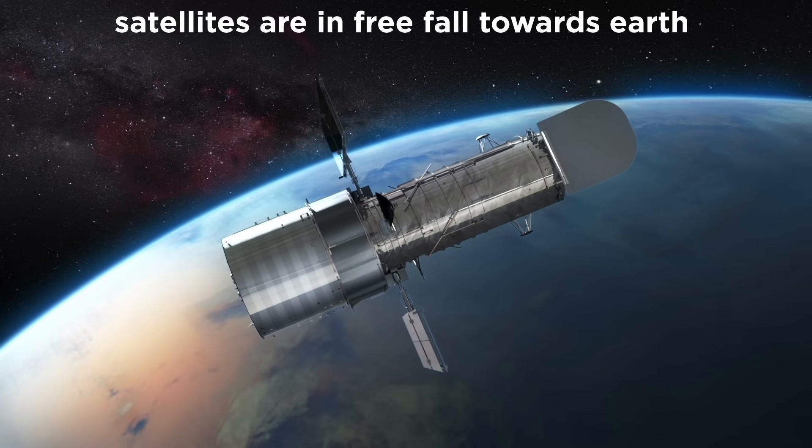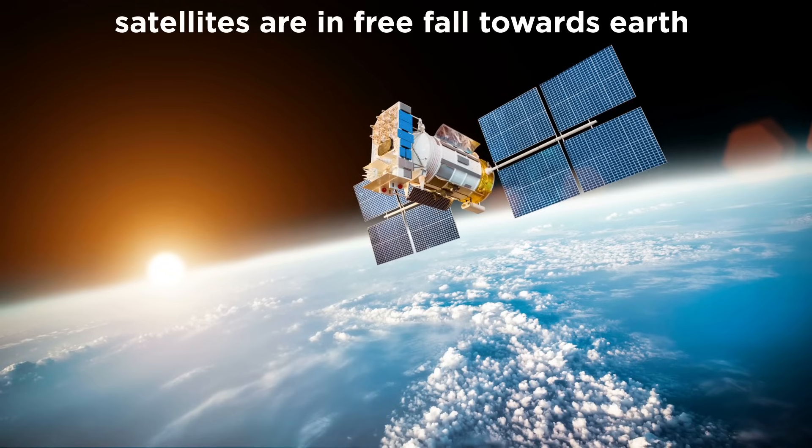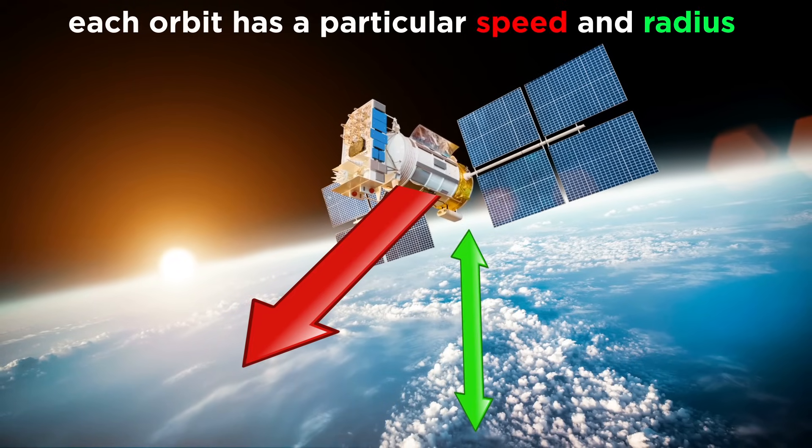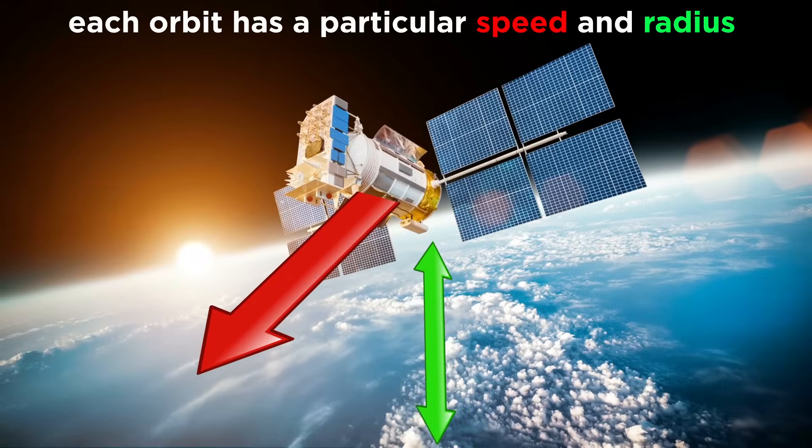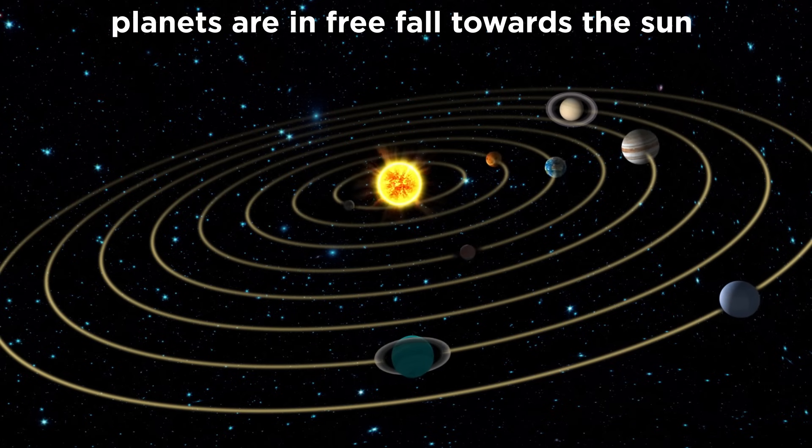But never hitting it, in a free fall just like Newton's apple. This means they orbit around the Earth indefinitely at a fixed speed and radius. The same can be said for all the planets around the Sun.